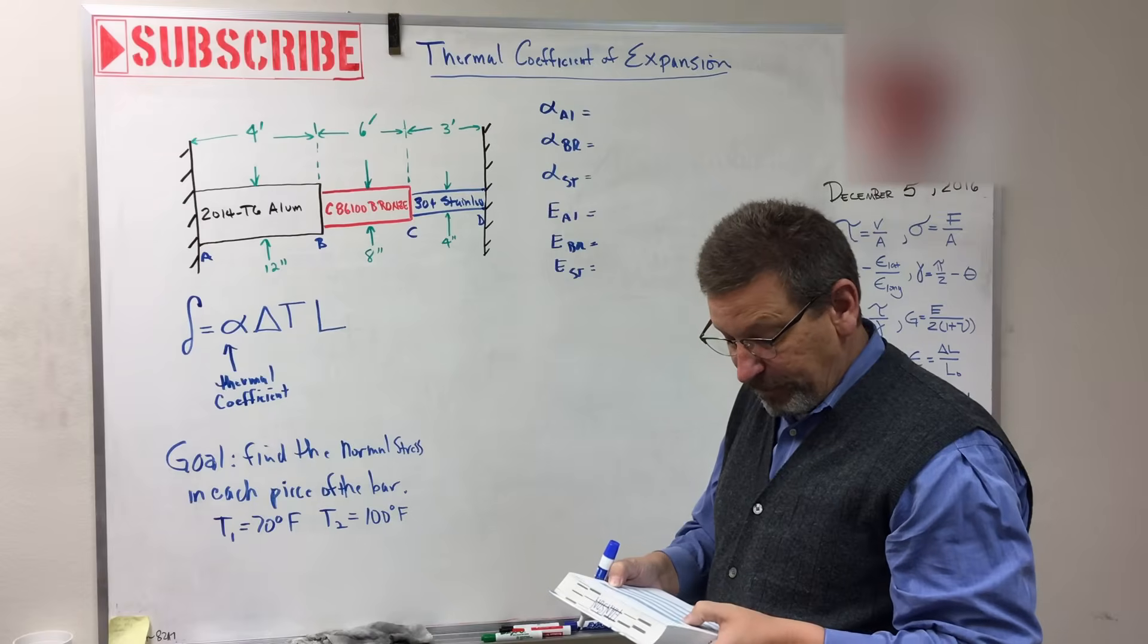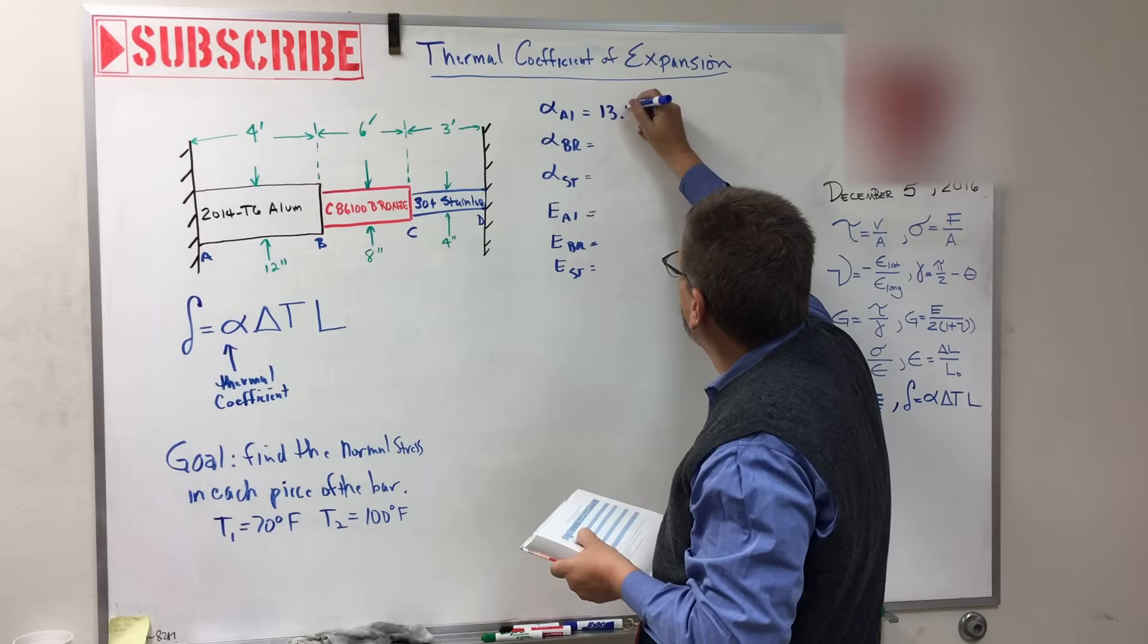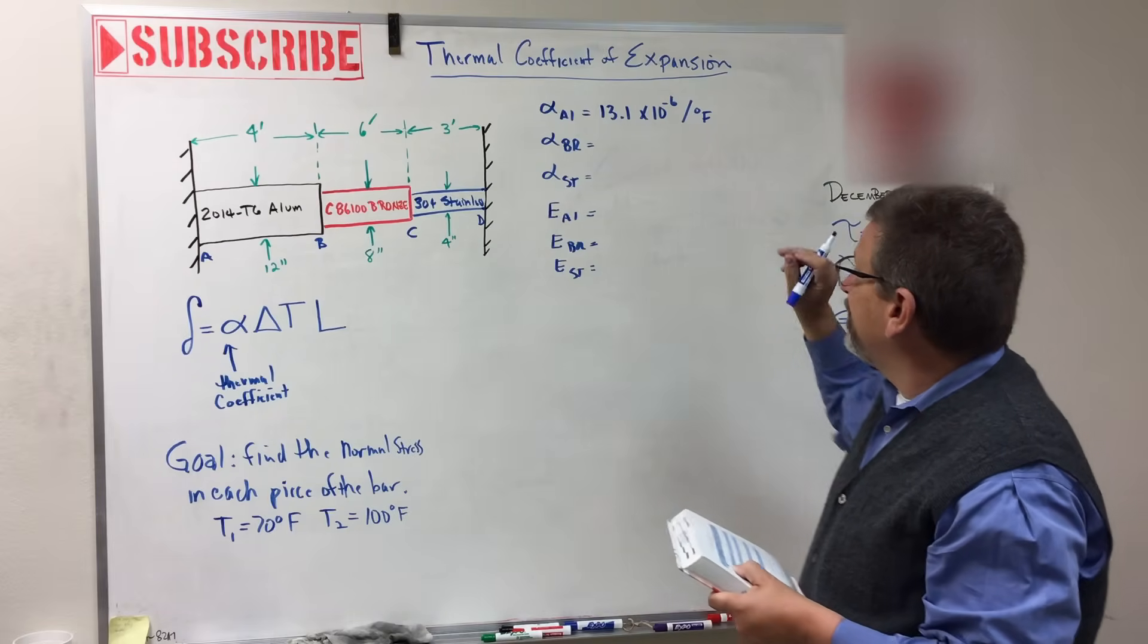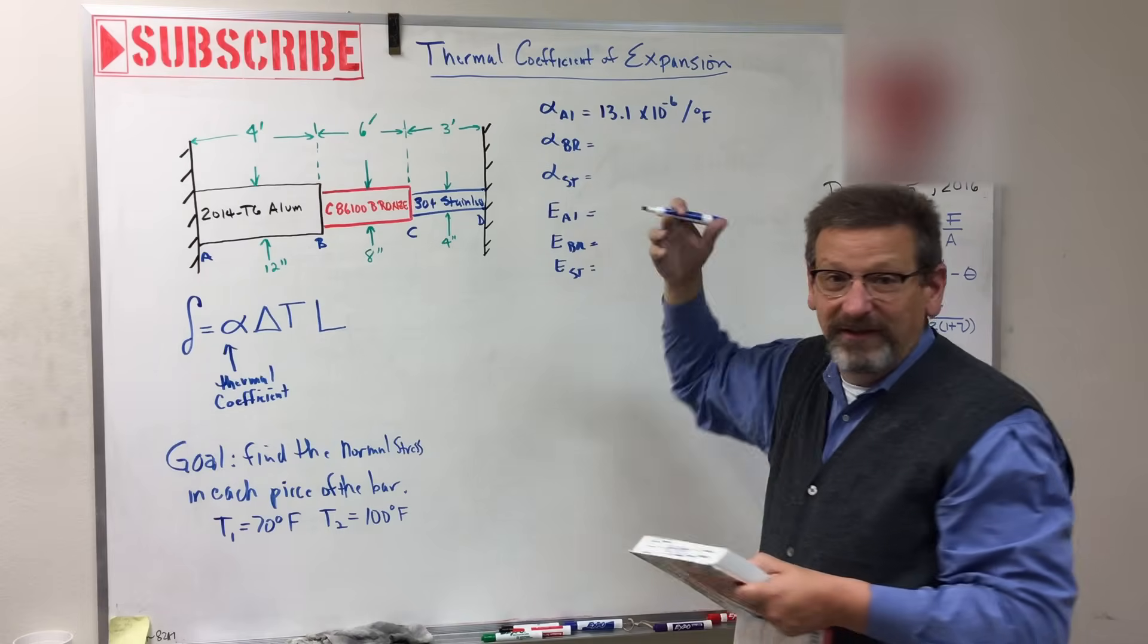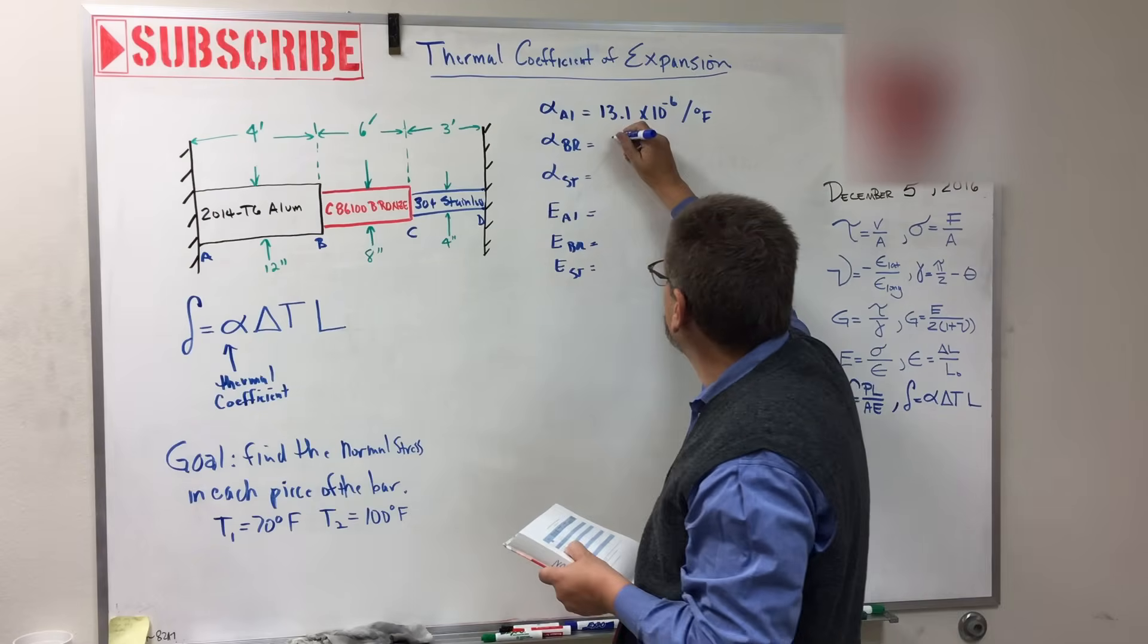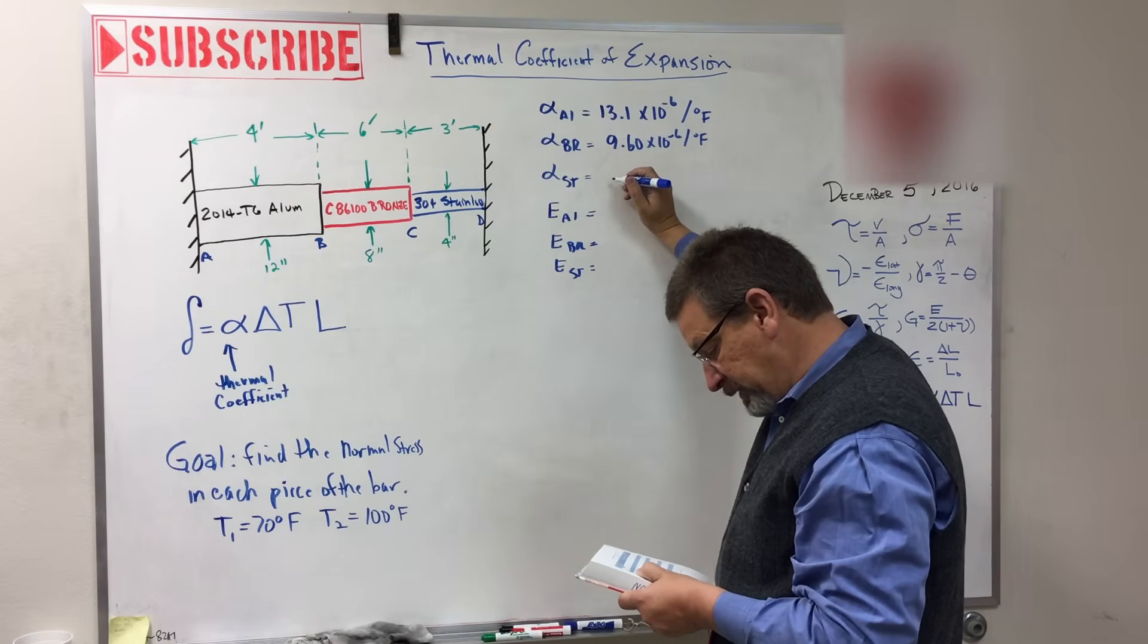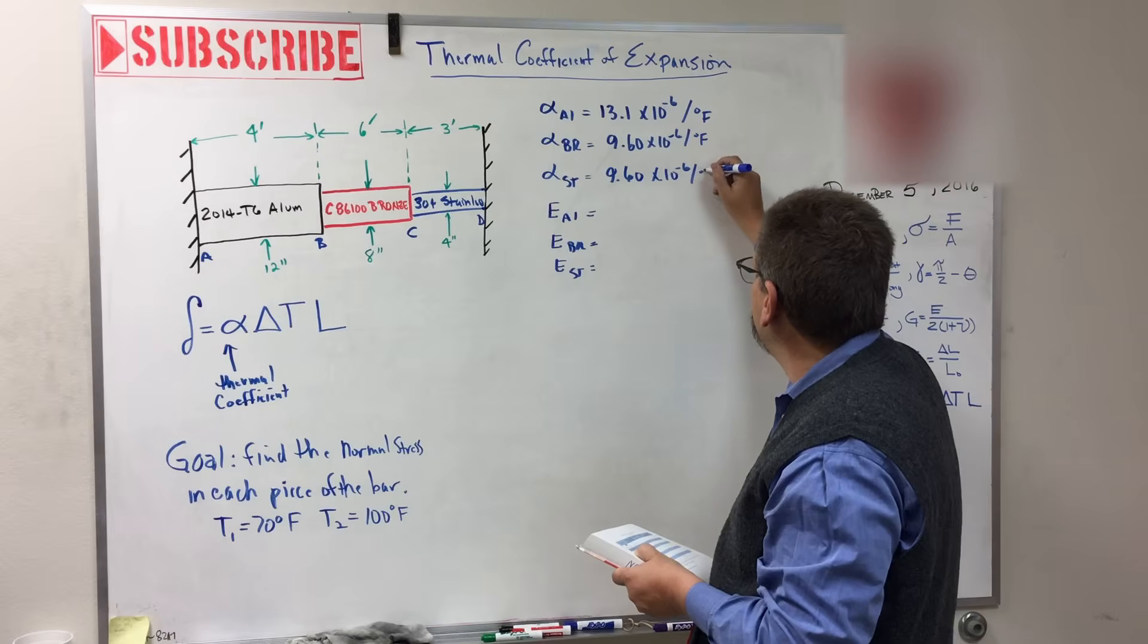So let's find E aluminum, E for bronze, and E for stainless. So let me get my book. And again, if you flip to the very back of your book, you have those material tables back here. The first one is the coefficient of thermal expansion. For 6061 T6, it's 13.1 times 10 to the negative 6 per degrees F. That's a weird unit. But it's telling you how much it's going to grow for every degree of Fahrenheit that you have. So then the bronze, 9.60 times 10 to the negative 6 per degree F. Stainless, 9.60, 10 to the negative 6 per degree F.